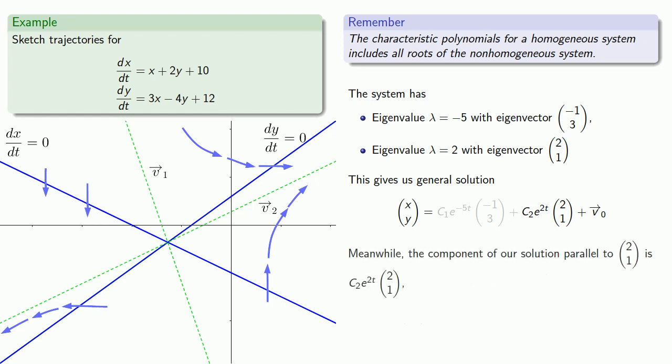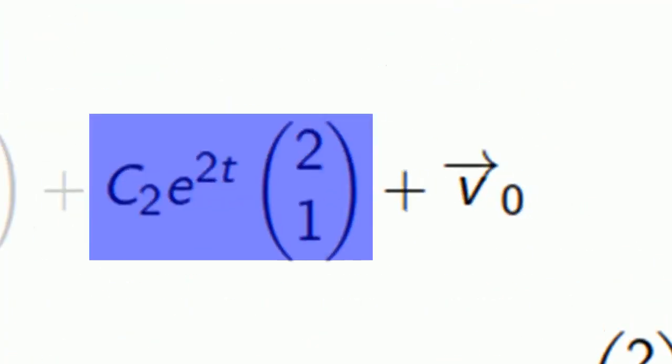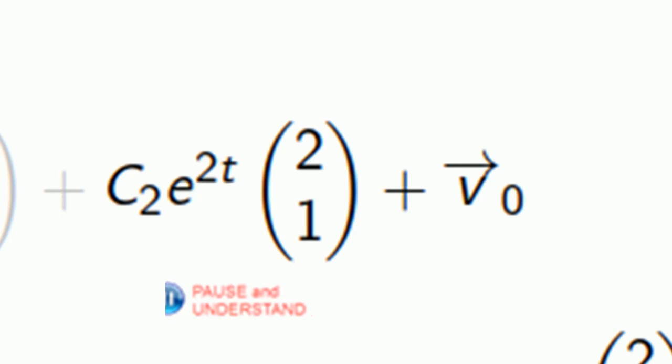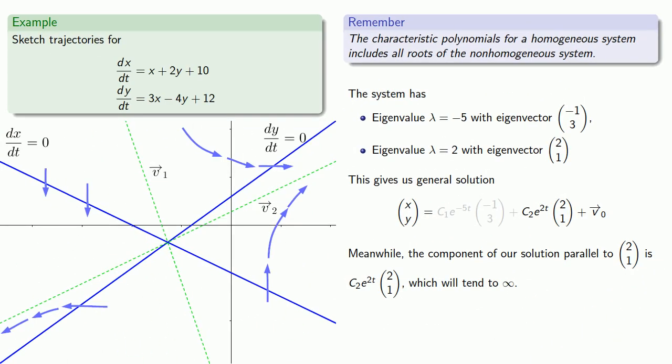Meanwhile, the component of our solution parallel to (2, 1) is c2 e to the power 2t times (2, 1), which will tend to infinity, which means that this component of our solution will become more and more important, essentially becoming the only part of our solution. What this means is that as t goes to infinity, our trajectories will tend to be parallel to this second eigenvector. And so we can give our trajectories a little bit more detail.